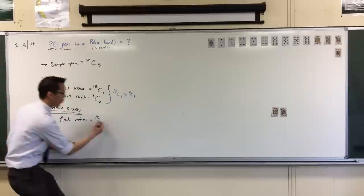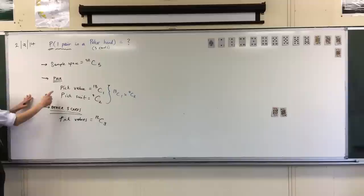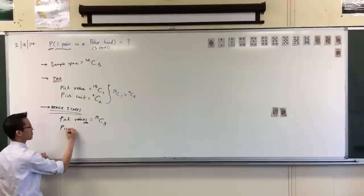So, therefore, I have 12 to choose from, and I want to choose three of them. So, I started with the pair, I picked a value, and then I picked some suits. With these three cards, I picked some values, plural, because there are three cards, and they can all be different values, no problem. Well, now I've got to pick the suits, don't I?